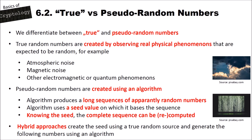Now let's have a look at true versus pseudorandom numbers. A true random number is created by observing real physical phenomena that are expected to be random — for example, atmospheric noise, magnetic noise, or other electromagnetic or quantum phenomena. However, we cannot always observe such things, and getting these random numbers is somehow slow. Because of that, we use pseudorandom numbers.